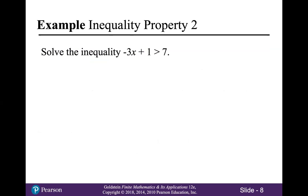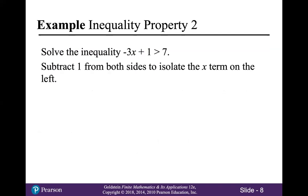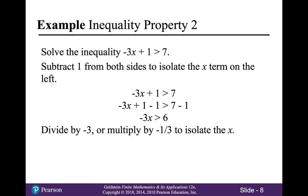Let's solve the inequality negative 3x plus 1 is greater than 7. We'll start by subtracting 1 from both sides, which gives us negative 3x is greater than 6. Now we're going to divide both sides by negative 3. Because negative 3 is a negative number, that is going to reverse the inequality symbol. So the set of numbers that make this inequality true are those numbers that are less than negative 2.